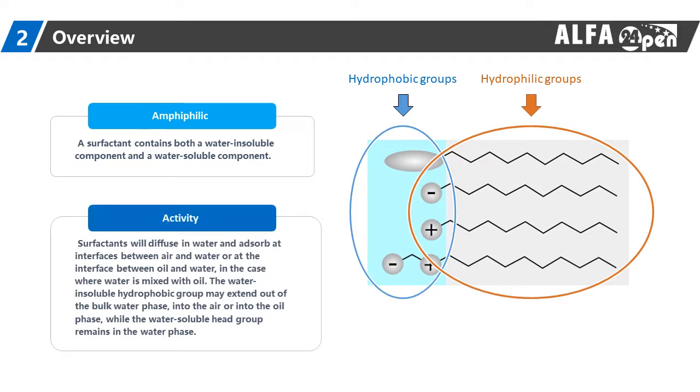Surfactants will diffuse in water and adsorb at interfaces between air and water or at the interface between oil and water, in the case where water is mixed with oil. The water-insoluble hydrophobic group may extend out of the bulk water phase into the air or into the oil phase, while the water-soluble head group remains in the water phase.